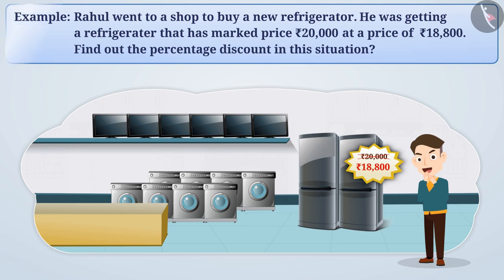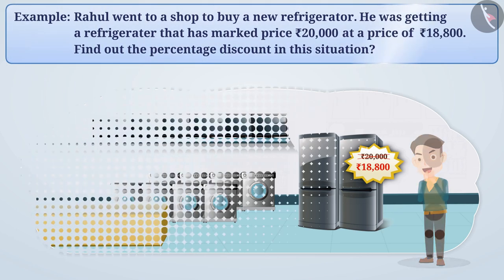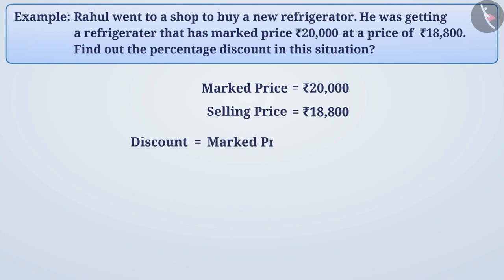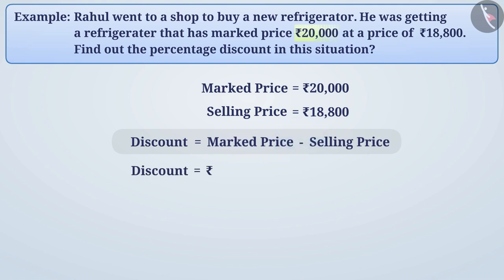From the question, we understand that the marked price is 20,000 rupees and the selling price is 18,800 rupees. To find the discount, we subtract the selling price from the marked price. Discount equals marked price minus selling price, which is 20,000 rupees minus 18,800 rupees, giving us a discount of 1,200 rupees.